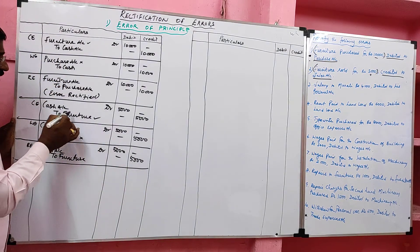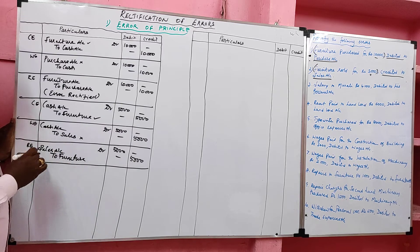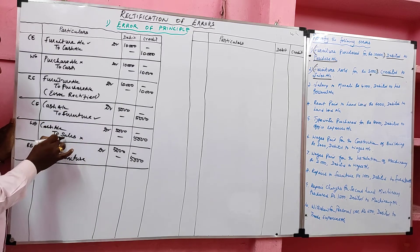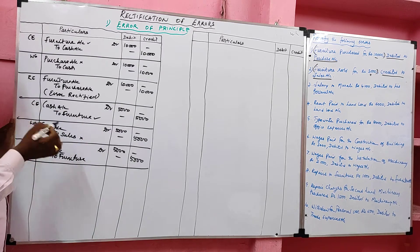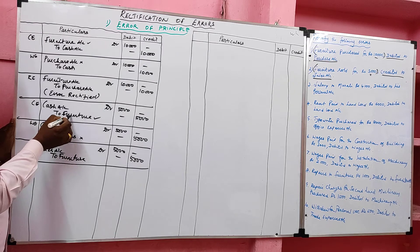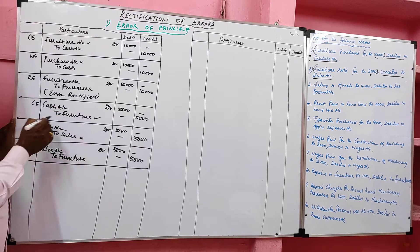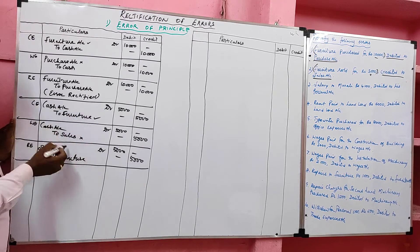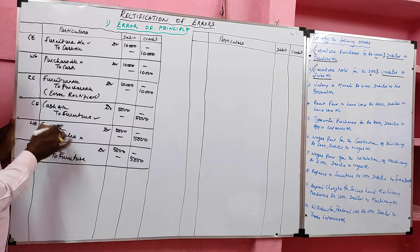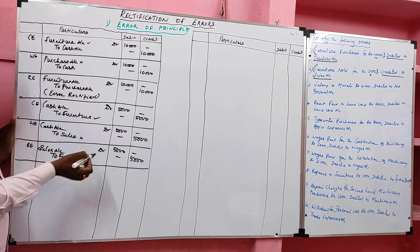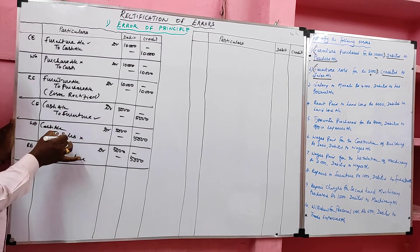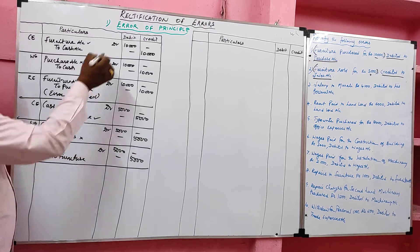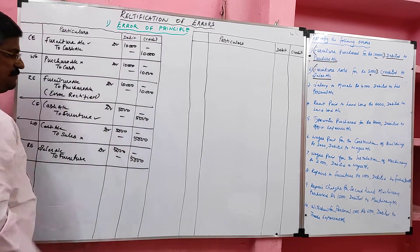Furniture is a real account; sales is a nominal account. Instead of recording real account, they recorded nominal account. Sale of furniture is a capital receipt; sale of goods is a revenue receipt. Instead of recording capital receipt, they recorded revenue receipt. This is called error of principle.